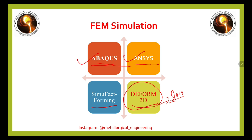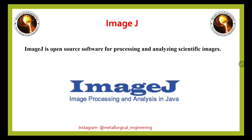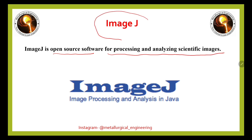ImageJ software is an open-source software for processing and analyzing scientific images, available free of cost. You can download it from the ImageJ website and use it to process your microstructure images for grain size determination and for editing your microstructures. ImageJ is the best tool for this purpose.